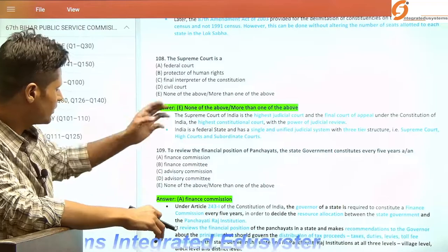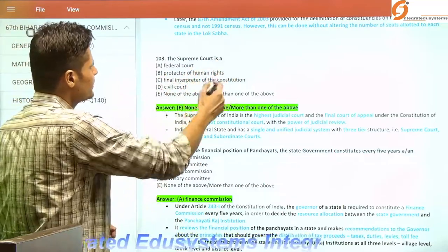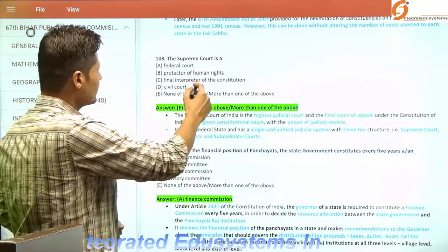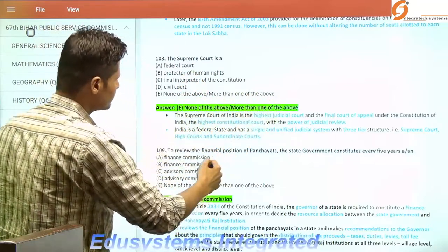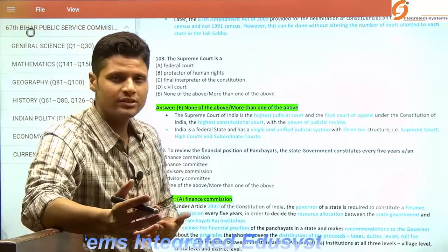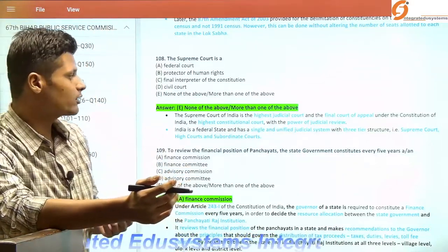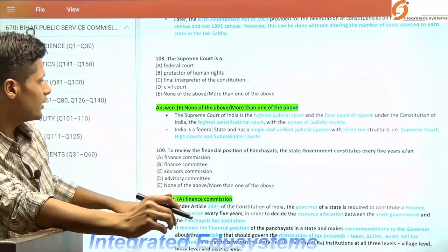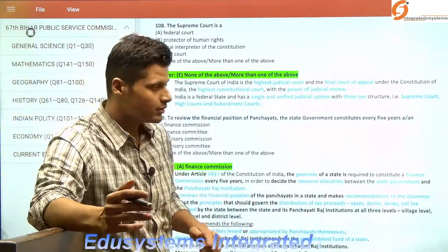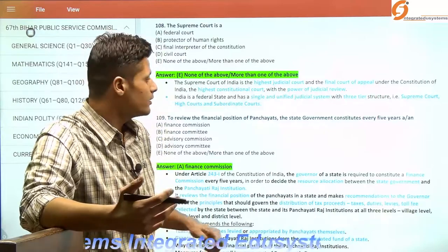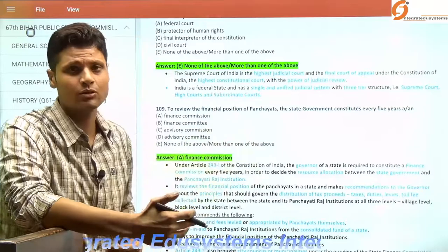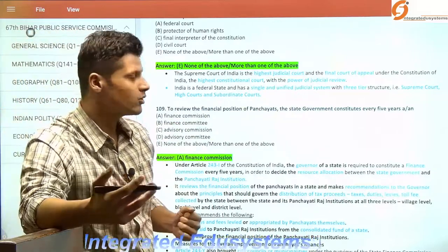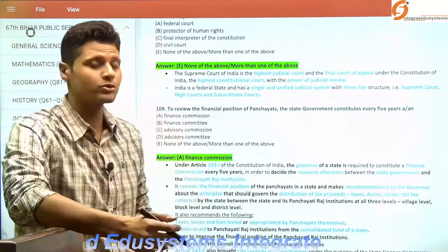The Supreme Court is a federal court, a protector of human rights, and gives the final interpretation of the Constitution — so there are multiple answers. It is the highest judicial court and the supreme institution for interpreting constitutional provisions. It is the final court of appeal, and its orders are implemented and adhered to by state governments, the central government, and lower subordinate courts like high courts.